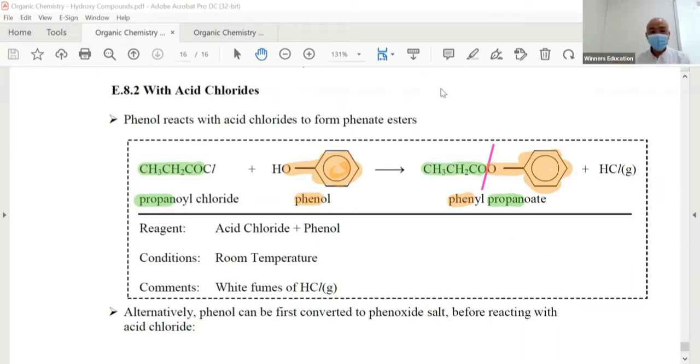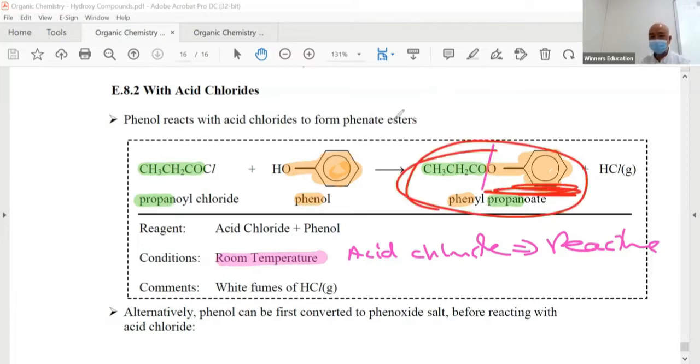So the alcohol of the phenol is always written first, shown last in the structure. Easy peasy. Let me squeeze it. And again, room condition is good enough. Don't need catalyst or anything because acid chloride is very, very reactive. We talked about this a lot of times.